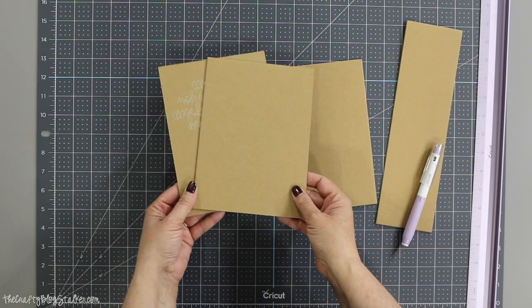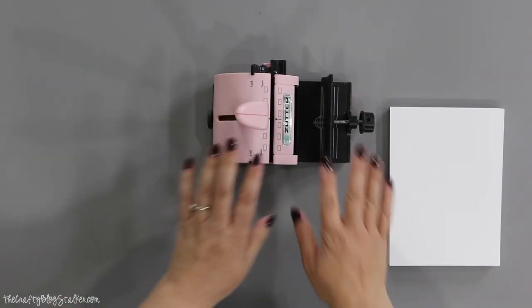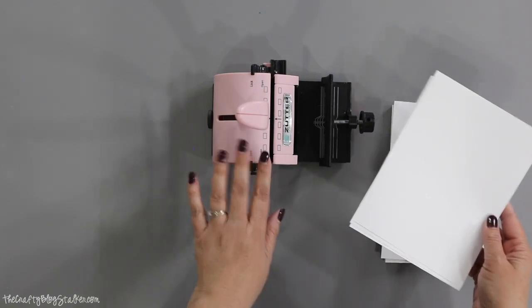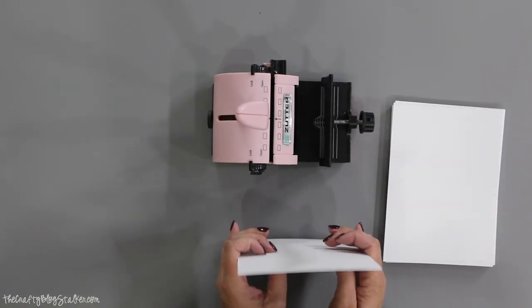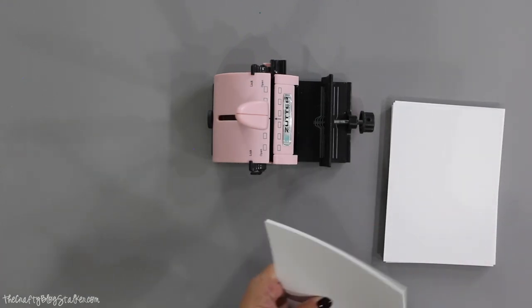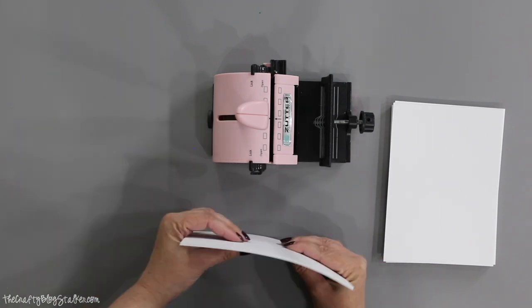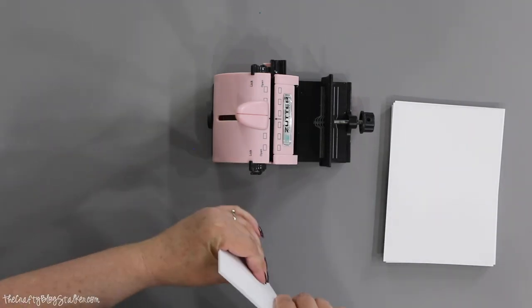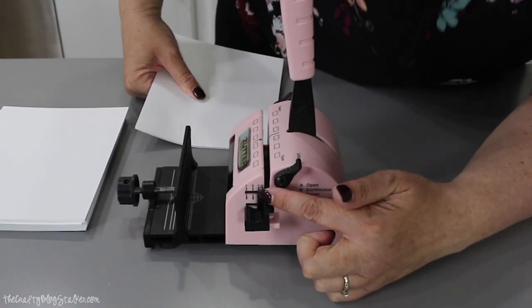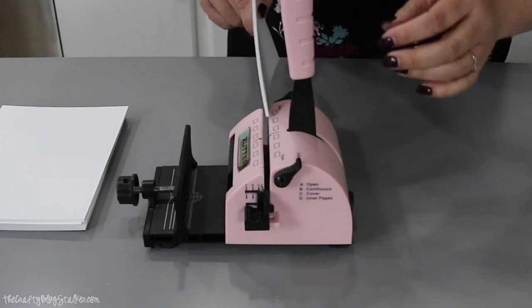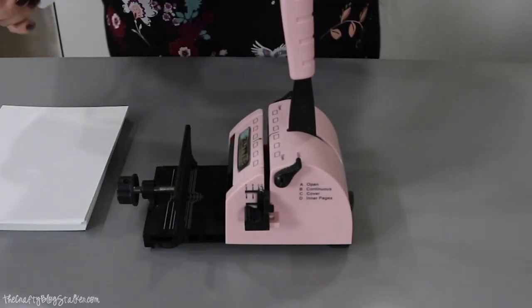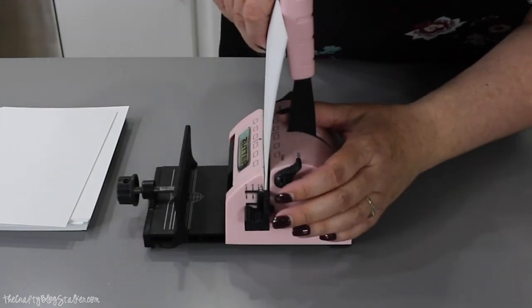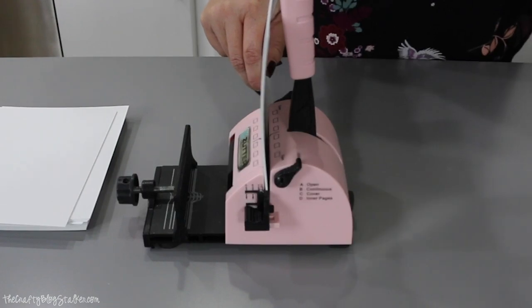So now I'm going to bring in my Zutter Bind It All so that we can assemble the book. So here is my Zutter Bind It All. This is the tool that I'm going to use to punch all of the holes inside my paper as well as bind the book. So we are going to start just with punching the holes. And the Bind It All will tell you exactly how many holes you need to cut for what size. So it's really, really nice. So we're going to start with C right there. And I've just got a stack of maybe like 10 or 15 pieces. In fact, that might be too much. Let's go a little bit less just until we know for sure how many it can cut. We're going to push it all the way towards that. And then you just pull the handle down.